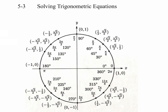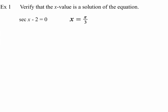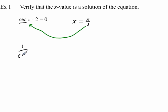Before we get into that, let's jump into our first kind of problem. The first example asks us to verify that a given answer is a solution of the equation. All this means is take that answer, plug it back in place of x, and make sure it works. Your calculator doesn't have a secant key, so write it as 1 over cosine of x minus 2 equals 0. If you do 1 over cosine of π/3 — make sure your calculator is in radian mode — you get 2 minus 2, which equals 0.